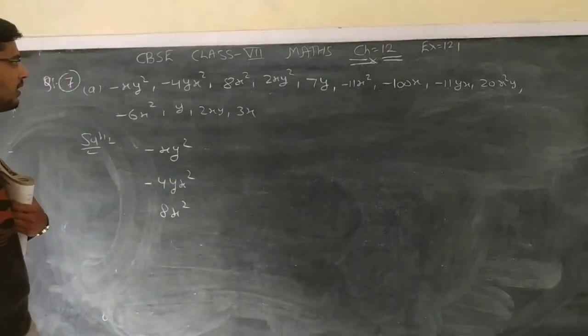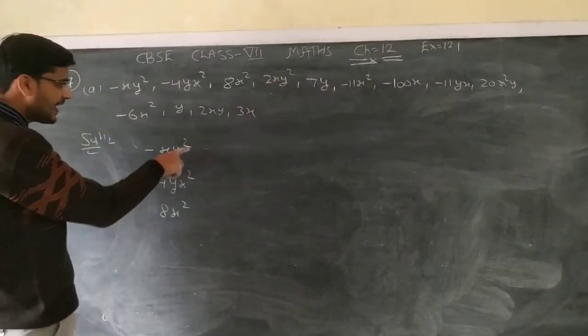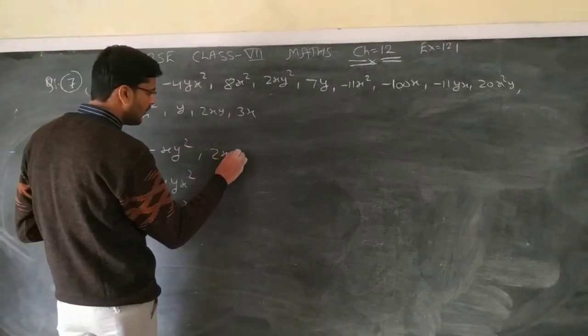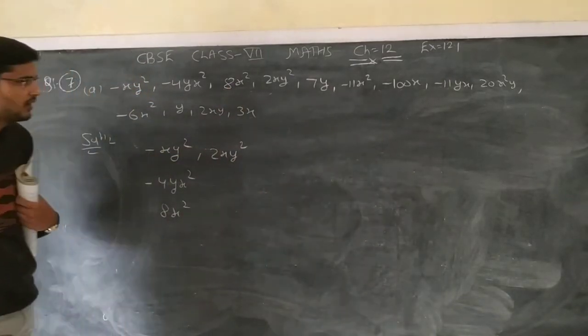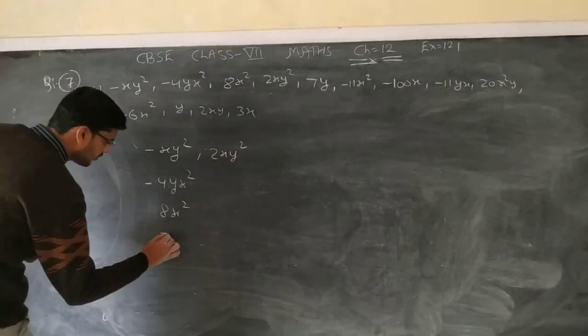Now next one is 2xy square. Now again, xy square we have, the coefficient is different, yes, we have this one, this is 2xy square. Now another one is 7y, 7y expression in each.